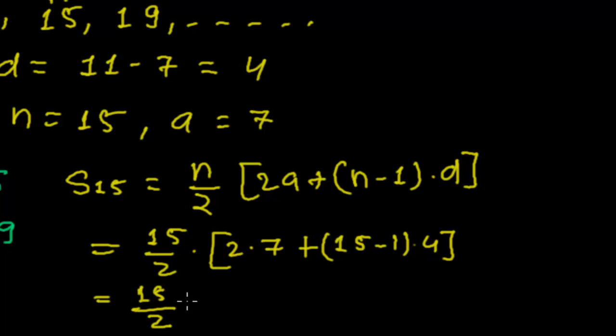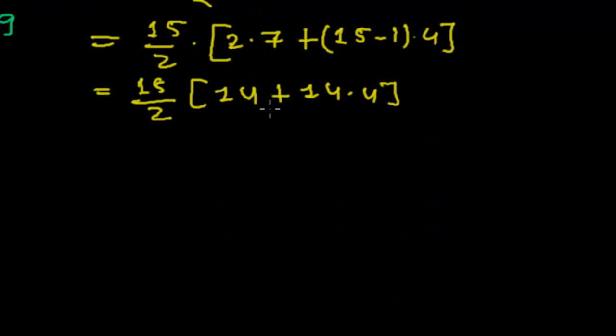So it becomes 15/2 times [2 × 7 + 14 × 4]. In both cases here is 14, so 14 comes outside, leaving 1 here and 4 here, giving us 15/2 times 14 times (1 + 4) = 15/2 times 14 times 5.